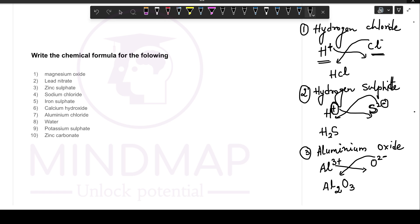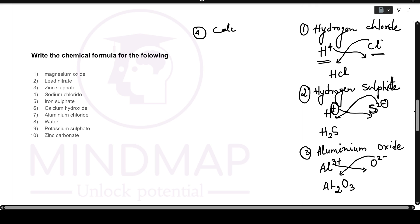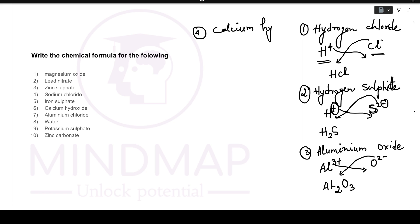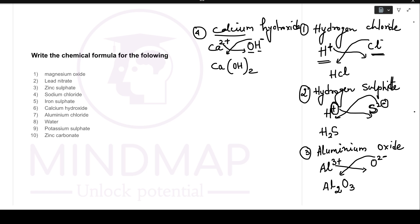Now calcium hydroxide. Calcium is Ca2+, hydroxide is OH-. Hydroxide has only one negative charge, calcium has two. The numbers exchange: 1 comes to Ca and 2 goes to OH. Since OH is a polyatomic group, we put it in brackets: Ca(OH)2.